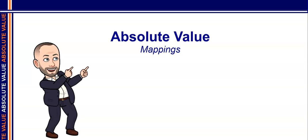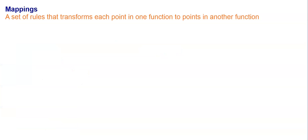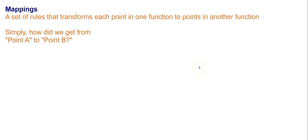Welcome back. Now that we've covered the transformations of absolute value, as well as how to graph absolute value using transformations, I want to talk about something called mappings. Mappings are simply a set of rules that transforms each point of one function into another function. Basically, it's like saying, how do we get from point A to point B? It's like saying, if I'm at the high school and I want to go to the grocery store, how do I get there? You might say, turn left, drive straight for four miles, and then turn right. The same principles apply here.